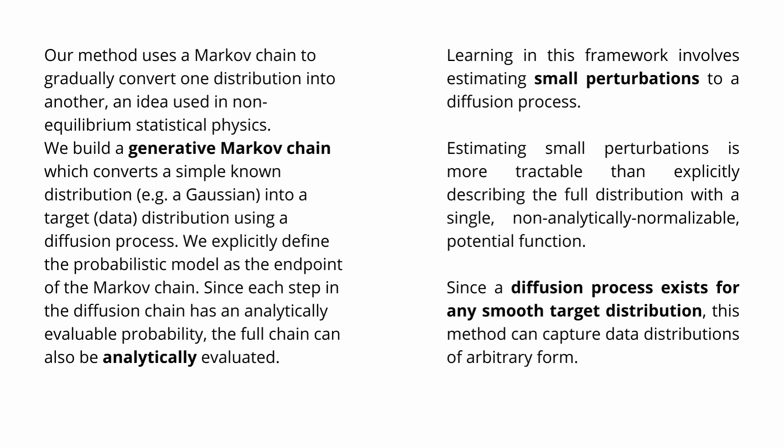The authors specify: their method uses a Markov chain to gradually convert one probability distribution into another — an idea used in non-equilibrium statistical physics. They built a generative Markov chain which converts a simple known distribution, such as a Gaussian, into a specific target data distribution using the diffusion process. They explicitly define the probabilistic model as the endpoint of those Markov chains. Since each step in the diffusion chain has an analytically evaluable probability, the full chain can also be analytically evaluated — a beautiful property.